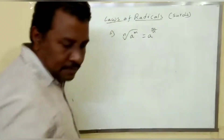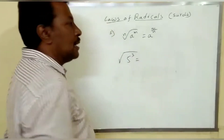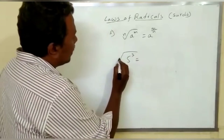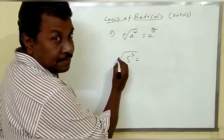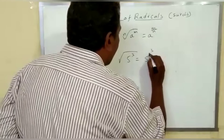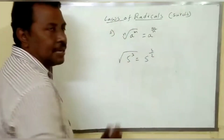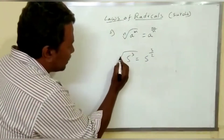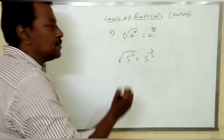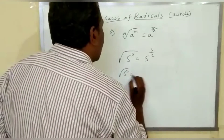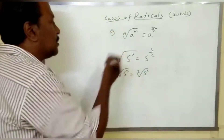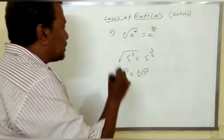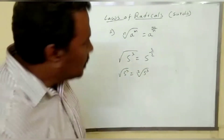In the same manner, square root of 5 power 3 — here square root means no order is mentioned, so this can be written as 5 power 3 by 2, because if no order is mentioned we take it as 2, not 1, as already explained in the previous class. Square root of 5 cube can also be written as second root of 5 cube — both are the same. So square root of 5 cube can be expressed as 5 power 3 by 2.